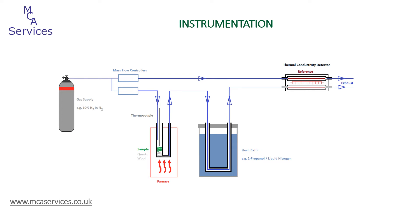Before the analysis stream passes through to the TCD on the analysis side, we have one final component to add in. When undertaking TPR, the reduction product is almost certainly going to be water, and we don't want that passing to the TCD as this would interfere with the signal — we're just trying to monitor the change in hydrogen as it's consumed by the sample. In other cases we also have to consider what else could be coming off of the sample, certainly with temperature programmed decomposition. We don't want to be passing anything corrosive through to the TCD that may damage the really delicate wires within it.